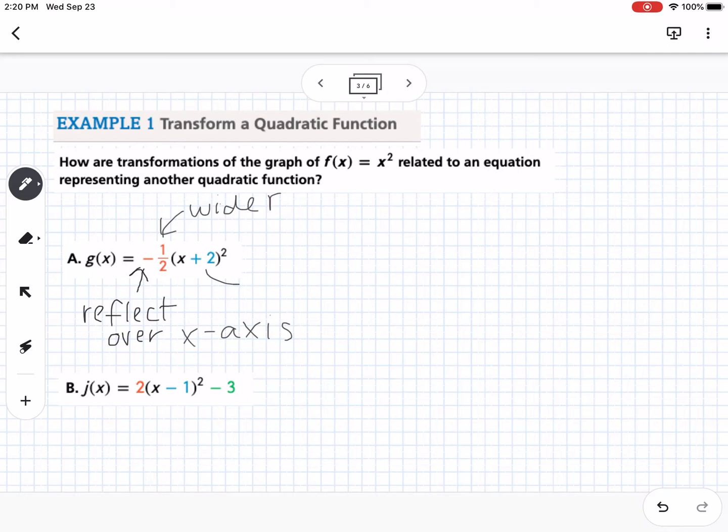Then we have a horizontal shift, this is going to move left two. So if I graph this over here, this is just a rough sketch. Our normal parent function for f(x) = x² looks something like that. What this is going to do is we are going to shift it to the left two, and it's going to make it wider and open down. So that's what that parabola roughly would look like.